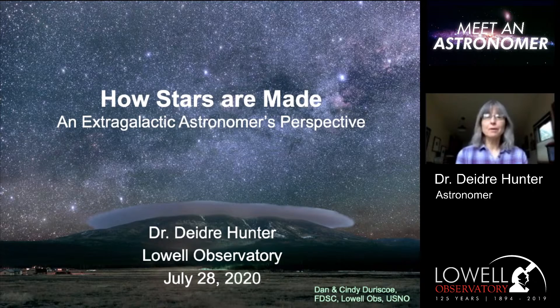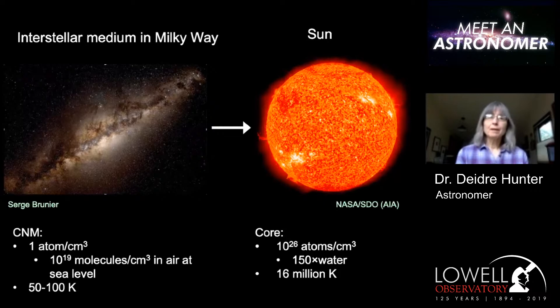It's really an amazing process. Stars are made from the gas of atoms and dust and stuff between the stars in galaxies. The typical density of the interstellar medium — that gas between the stars — is about one atom per cubic centimeter, and the temperature is about 50 to 100 degrees Kelvin.